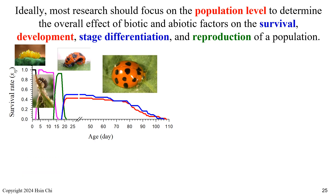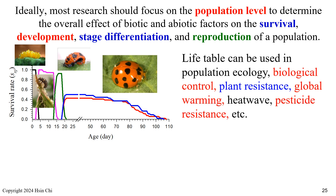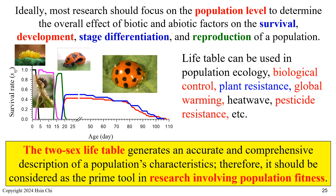Ideally, research should focus on the population level to determine the overall effect of biotic and abiotic factors on the survival, development, stage differentiation, and reproduction of a population. Life tables can be used in population ecology, biological control, plant resistance, global warming, pesticide resistance, and more. The two-sex life table generates an accurate and comprehensive description of a population's characteristics; therefore, it should be considered as the prime tool in research involving population fitness.